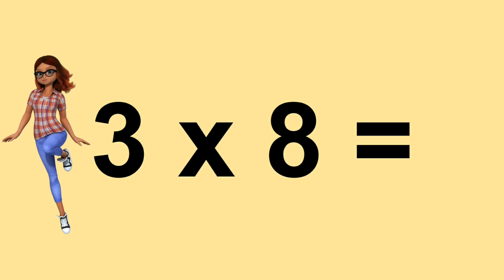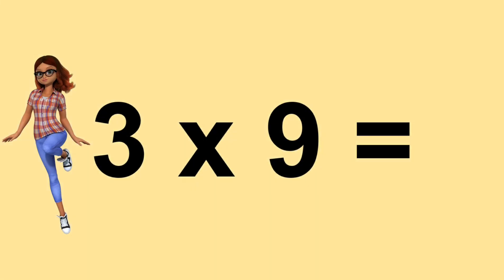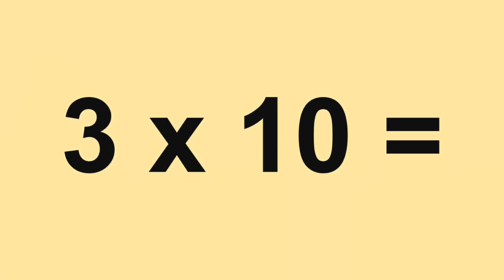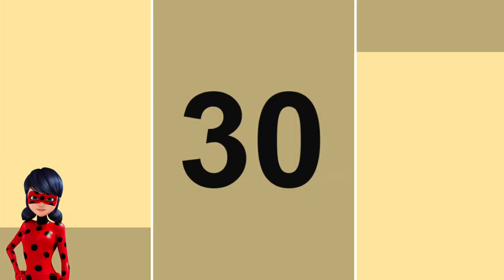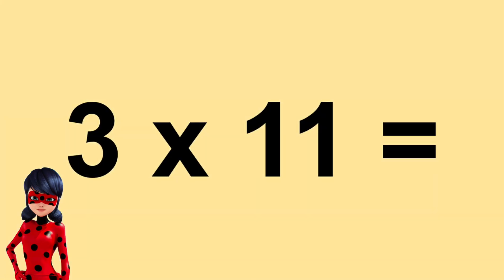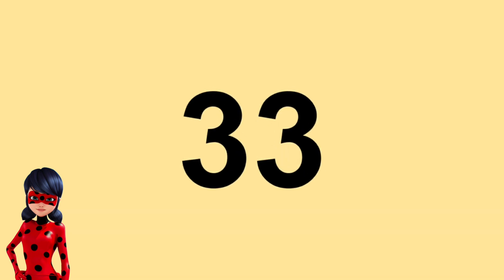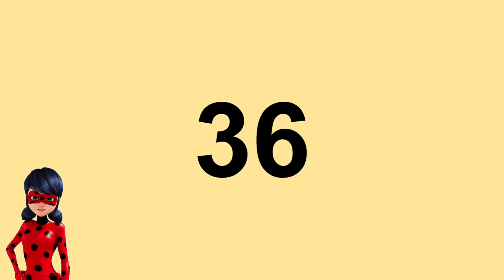Three times seven equals twenty-four. Three times nine equals twenty-seven. Three times ten equals thirty. Three times eleven equals thirty-three. Three times twelve equals thirty-six.